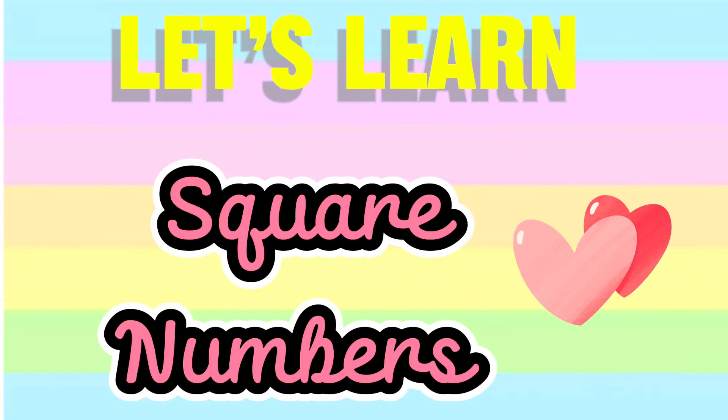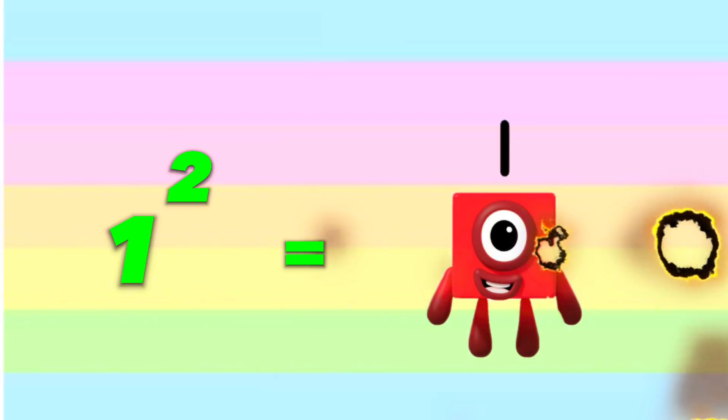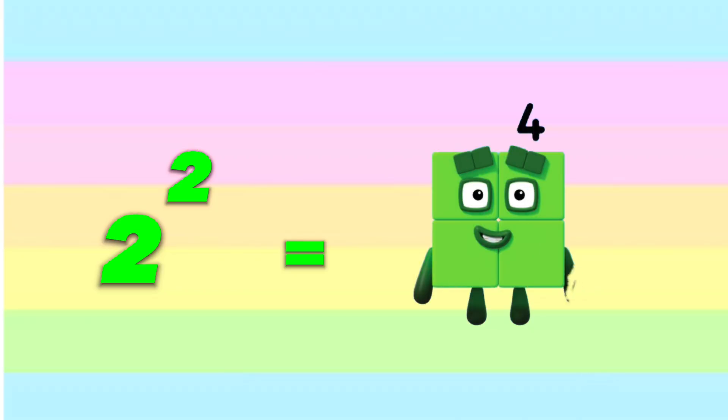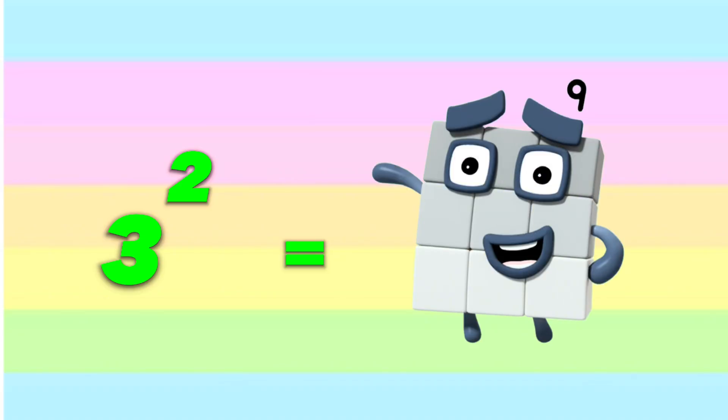Let's learn square numbers! 1 squared is equals to 1. 2 squared is equals to 4. 3 squared is equals to 9.